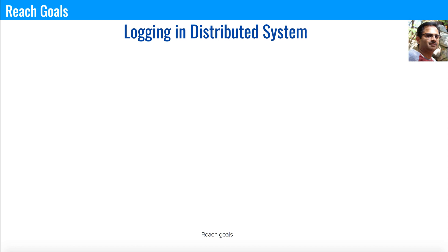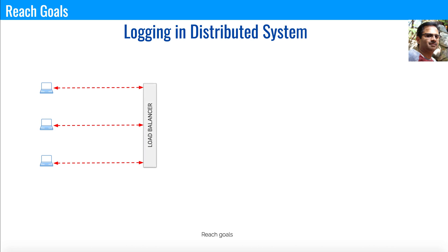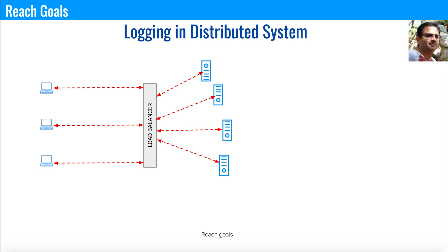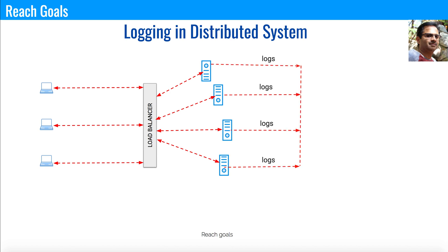In a distributed system, you have a number of clients across the globe connecting to load balancers, which in turn connect to multiple nodes situated across the globe. All the logs are accumulated in their respective machines. If I want to get certain information from the logs, it is very difficult to go into each and every node and figure out the log error messages.